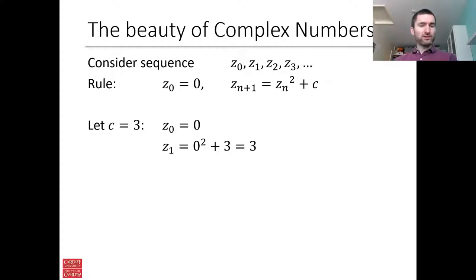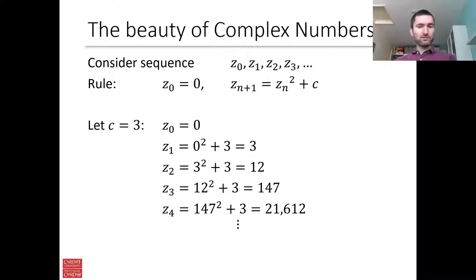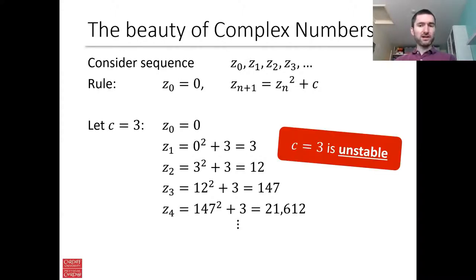Let's compute z1. Well z1 is z0 squared plus c. So 0 squared plus 3 we get 3. Z2 is 3 squared plus 3 so we get 12. Z3 is 12 squared plus 3 so we get 147. Z4 is 147 squared plus 3 so we get 21,612. And I think you can see what's happening here. So as we keep going the sequence is going to blow up. The numbers are going to get larger and larger in size very very quickly. So we call this value of c unstable. C equals 3, the point of 3 is unstable. So unstable values of c are values where the sequence blows up.